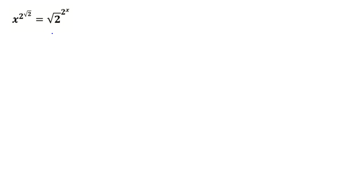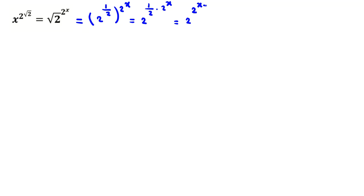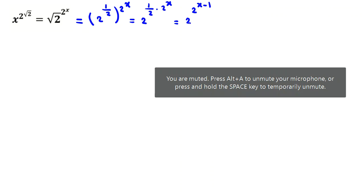We should take log — but in what base? Root 2. But do you agree 2 is simpler than root 2? Of course. So we should change it to 2 to the power of something. Root 2 is 2 to the power of 1/2, so root 2 to the power of 2^x becomes 2 to the power of x/2, which equals 2 to the power of x minus 1.